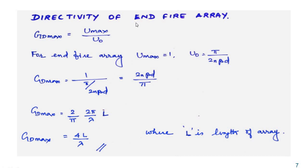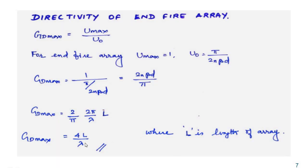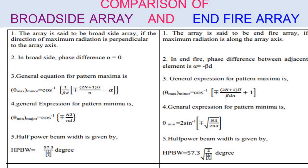Now we discuss the directivity of the end-fire array. Directivity D = U_max / U_naught; U_max = 1. For the end-fire array, U_naught was calculated as π / (2nβd). Substituting gives D = 2nβd / π = 4L/λ. So the directivity of the end-fire array is 4L/λ, which is higher than the broadside array directivity of 2L/λ.